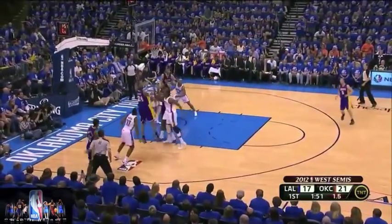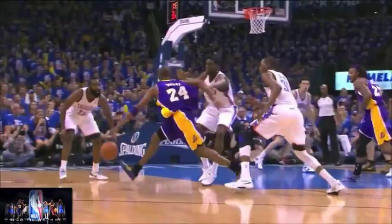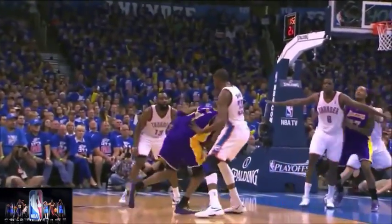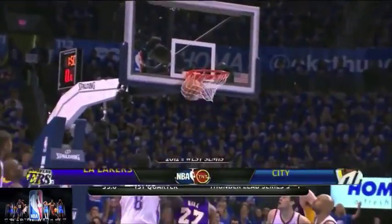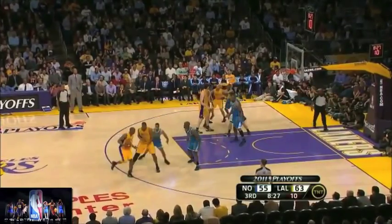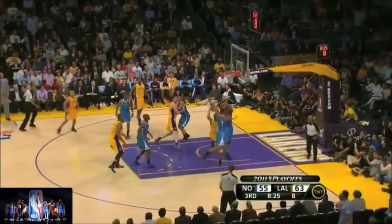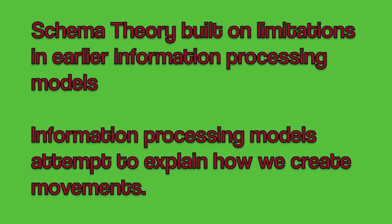They involve using our senses to understand what is happening — hence the perceptual part of that definition — and then use our bodies to take action, hence the motor part of that definition. Schema Theory was developed by Richard Schmidt in the 1970s. His work built on the limitations of earlier information processing models that attempted to explain how we create movement from experience.